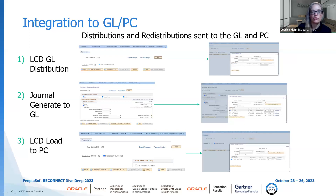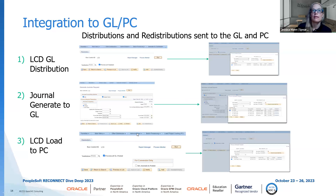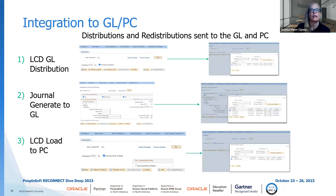For integrating to the GL, we take advantage of the journal generation functionality to bring data from the bolt-on into the GL. A process first creates the GL distribution — basically the debits and credits — and puts it into a GL staging table, which we then journal generate into the GL. Once those journals are edited and successfully posted, another process takes the detailed version of that data and sends it into the project costing interface table, taking advantage of already-delivered functionality within financials.